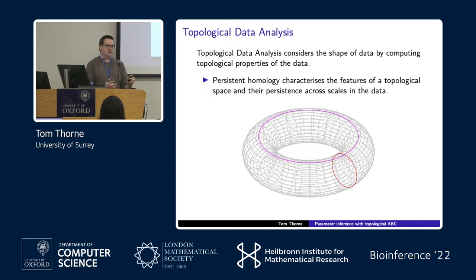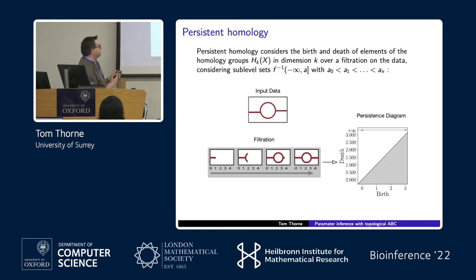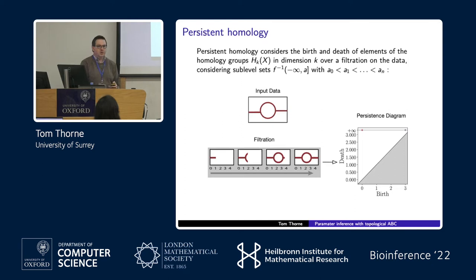Persistent homology tracks the changes in these features of the topological space as we look across scales — or filtrations — of the data. We consider the birth and death of elements of these homology groups in some dimension over a filtration defined on the data. For example, if we have data and define a filtration that sweeps from left to right, including more and more data as we go, the persistent homology tracks the birth and death of elements in each dimension as we filter across.